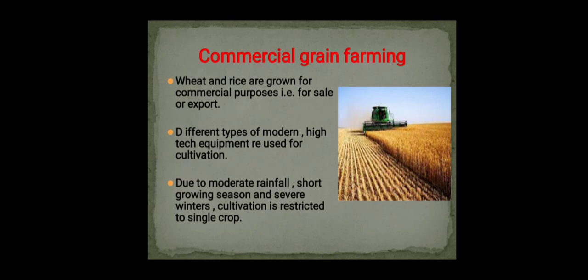Commercial grain farming involves growing grains such as wheat and rice for commercial purposes — for sale or export. Modern high-tech equipment is used for cultivation. Due to moderate rainfall, short growing season, and severe winters, cultivation is restricted to a single crop only.